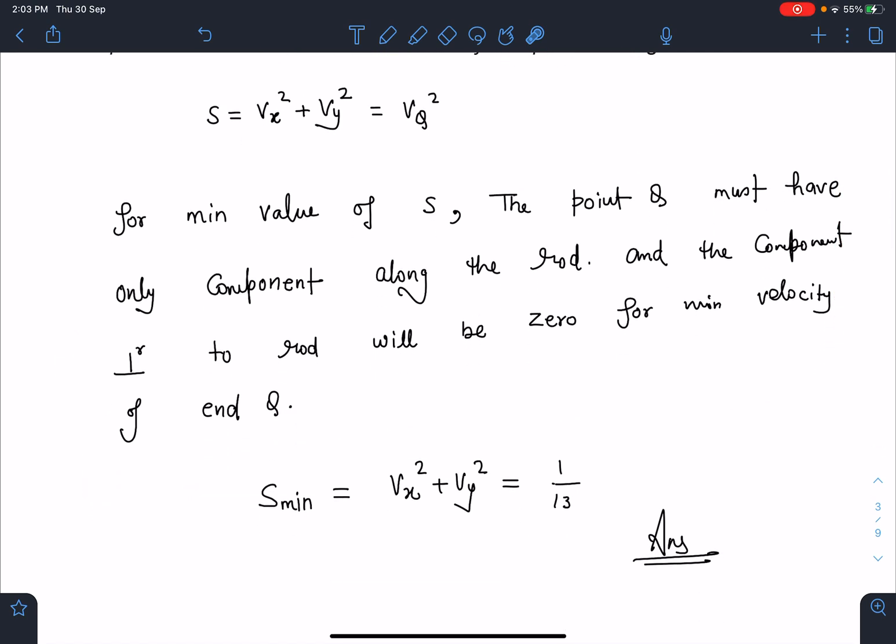So only this is the velocity of point Q, this is the minimum value. From here I can write that Vx² + Vy² = Vq². S minimum will become 1 by root 13 whole square. So this is going to be the answer for this problem, 1 by 13.